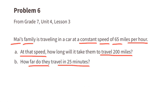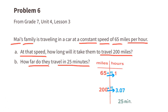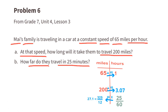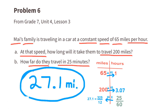Part B: how far do they travel in 25 minutes? Since the table uses hours, 25 minutes is represented as 25 over 60. Multiplying 25/60 times 65 equals approximately 27.1. So the family can travel 27.1 miles in 25 minutes.